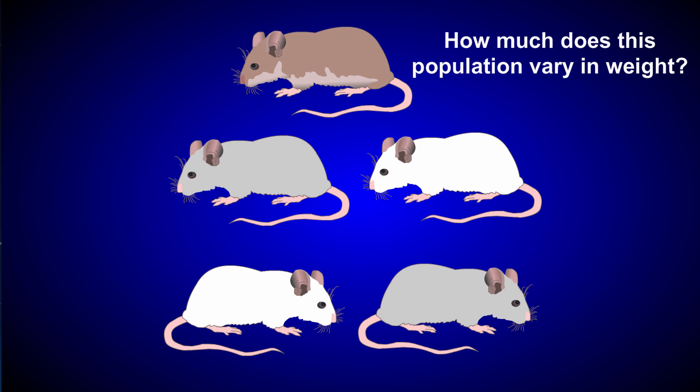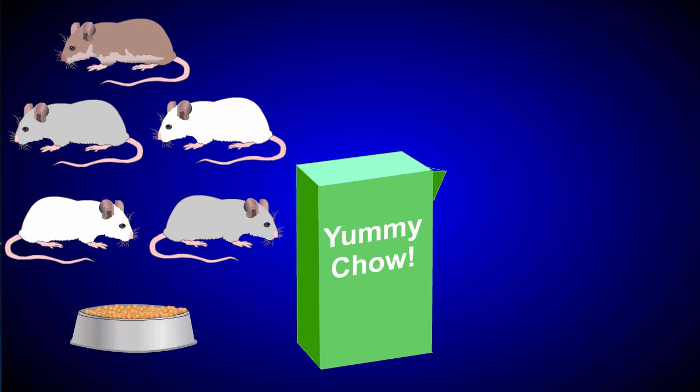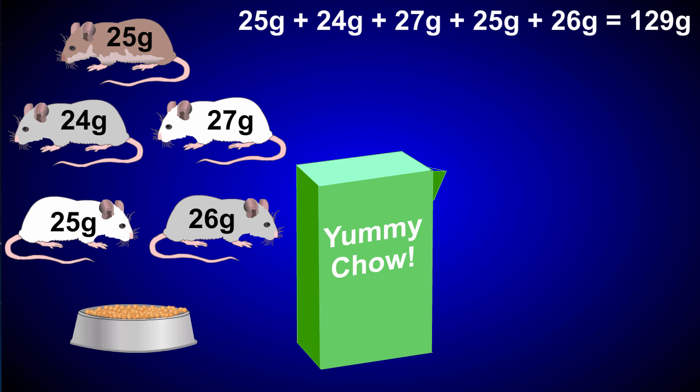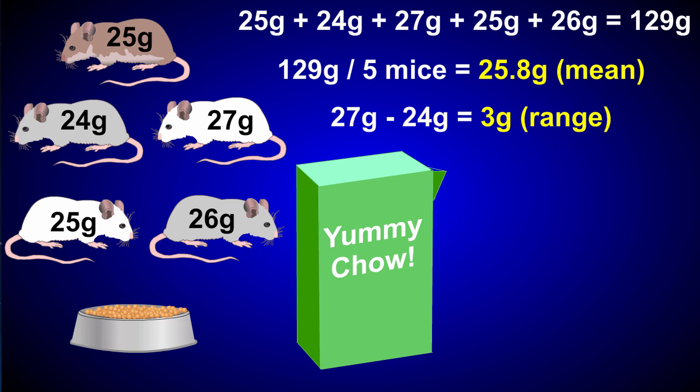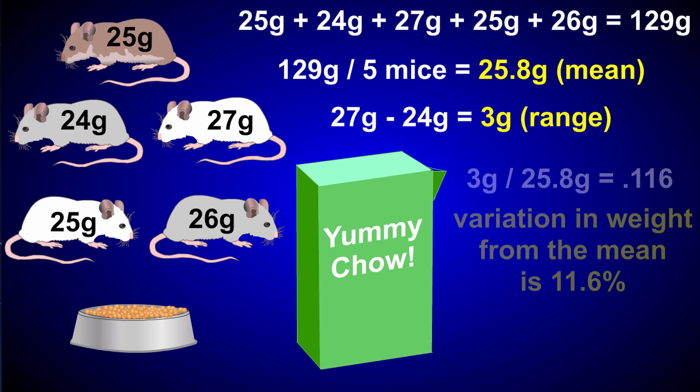What if you wanted to know how much a population of individuals varied in weight? You might be in charge of a population of mice for research, which had been fed something like yummy chow. First you could weigh each mouse. Then you could find the average weight, otherwise known as the mean, by adding up all the weight values and dividing by the number of mice. Next, you could calculate the weight range by finding the difference between the highest and lowest weight values. And finally, you could calculate what percentage this variation in weight was of the mean.